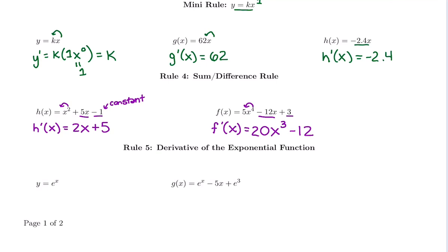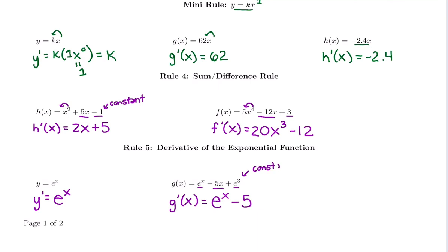We're halfway through our rules. Now we add the exponential function. If we have e to the x, this is possibly the easiest rule: the derivative of e to the x is e to the x — we don't even bring down a power. For g prime: derivative of e to the x is e to the x; derivative of negative 5x is negative 5 by the mini rule. And derivative of e cubed — be careful! e cubed is just a constant with no x on it, so its derivative is 0.